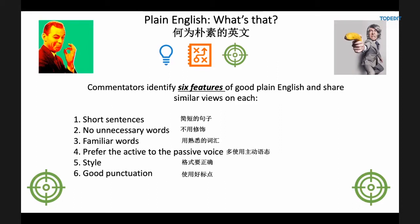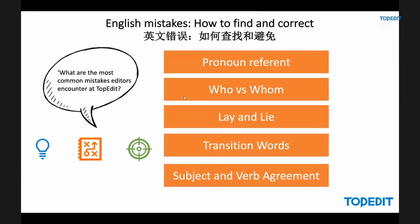Editors at the top international journals want their articles to be accessible to as many people as possible. They want the communication to be effective. For that reason, these journals ask authors to write in the active voice. If you don't believe me, go and download a paper from Nature and have a look at the way it's written. So you are probably thinking: what are the common English language mistakes that editors at Top Edit often encounter?